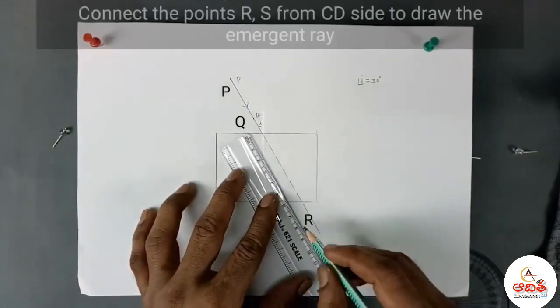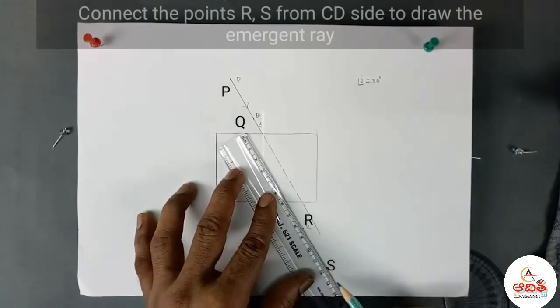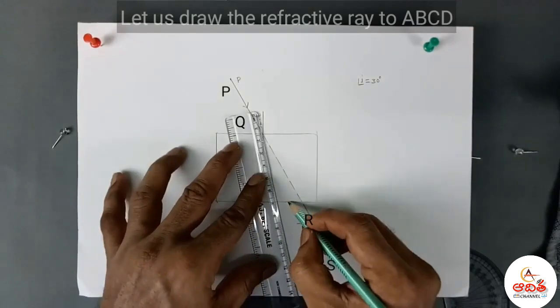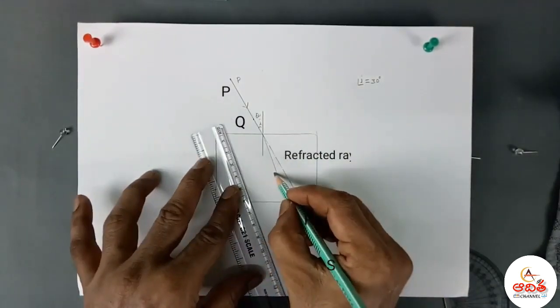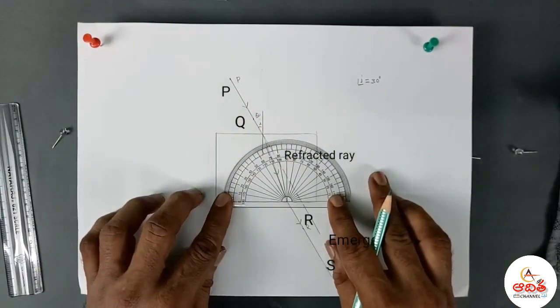Connect the points R and S from CD side to draw the emergent ray. Now let us draw the refracted ray through ABCD. I am doing it, children, you can see it clearly.